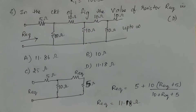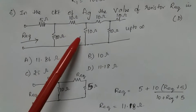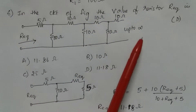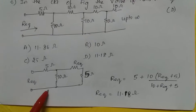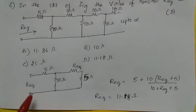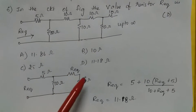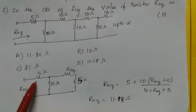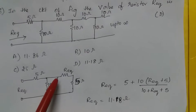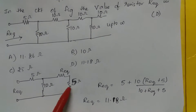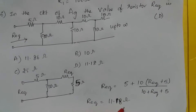In the circuit of the figure, the equivalent resistance R_equivalent is to be found. The 10 ohm network continues to infinity, so we can redraw the circuit: R_equivalent equals 5 ohms in series with the parallel combination of 10 ohms and (R_equivalent + 5). Solving this equation gives R_equivalent = 11.18 ohms.